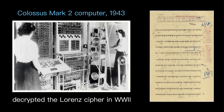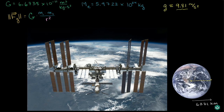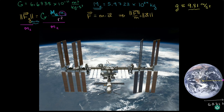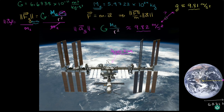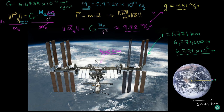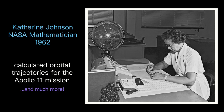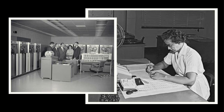Now, there's nothing special to these calculations per se. I could manually solve some version of these equations to calculate the trajectory myself. In fact, all of these calculations used to be performed by teams of humans. But with the sheer complexity and amount of data to process, these tasks take humans a lot of time. Computers, on the other hand, can process huge amounts of data in milliseconds.